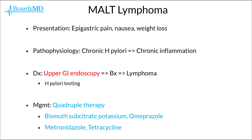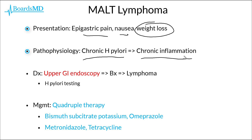Moving on to MALT lymphoma — with MALT standing for mucosa-associated lymphatic tissue — this generally presents with epigastric pain, nausea, and weight loss. The pathophysiology is that chronic H. pylori infection leads to chronic inflammation and ultimately the development of a lymphoma. On upper GI endoscopy with biopsies we will see lymphoma on histopathology, and we should also perform H. pylori testing in these patients. Remarkably, management is not primarily surgical but rather with quadruple therapy for H. pylori, which consists of bismuth subsalicylate, omeprazole, metronidazole, and tetracycline.